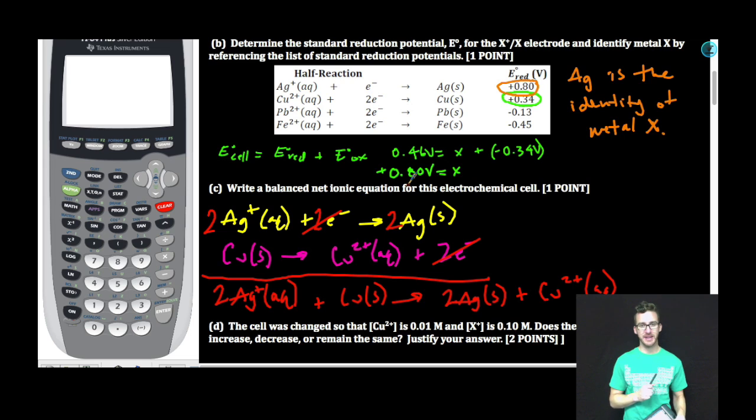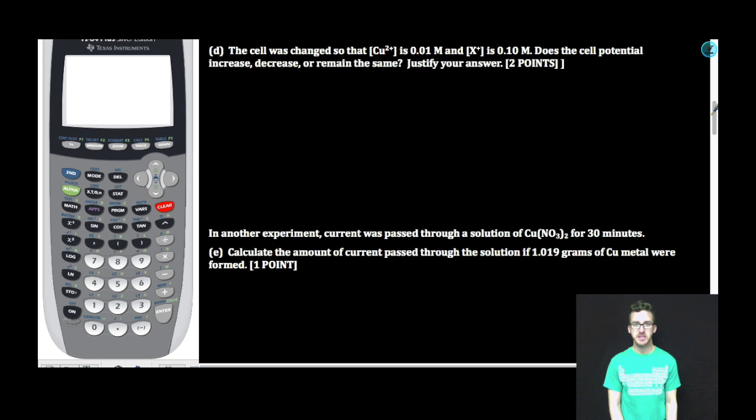Make sure you check electrons lost equals electrons gained before you write your overall balanced net ionic equation. Especially tricky in a question like this, because you could balance for mass very easily, but we need to make sure we're balanced for charge. Also, important to include your states and include those charges of your ions. Part D: The cell was changed so that the copper ion concentration is 0.01 molar, and the X plus ion concentration is 0.1 molar. Does the cell potential increase, decrease, or remain the same? Justify your answer.